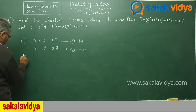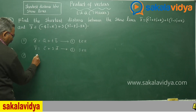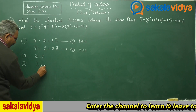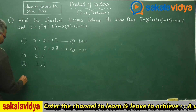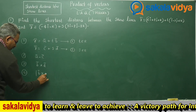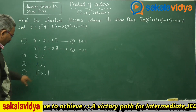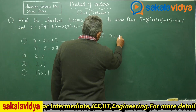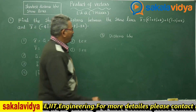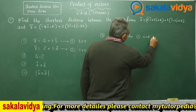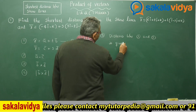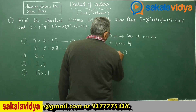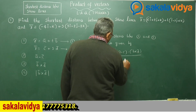Whenever equations like this are given, first we need to find out ā minus c̄ — we get a vector. Next we need to find out b × d, and then we have to find the modulus of that vector. After that, the distance between lines 1 and 2 is given by: d = (ā − c̄)·(b̄ × d̄) divided by |b̄ × d̄|.